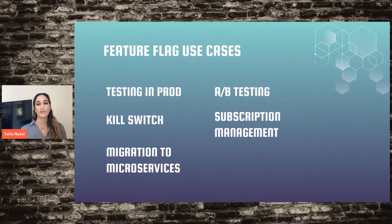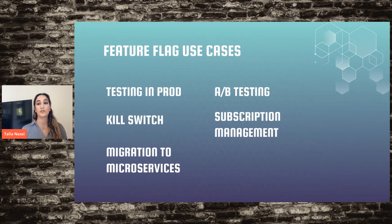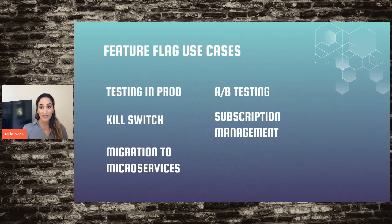We use feature flags to test features in production to ensure proper functionality, and we use feature flags to perform A/B testing to figure out which version of a feature gives a higher conversion rate. You can also use feature flags as a kill switch, for subscription management to manage permissions for specific user groups, and to migrate your monolith to microservices.